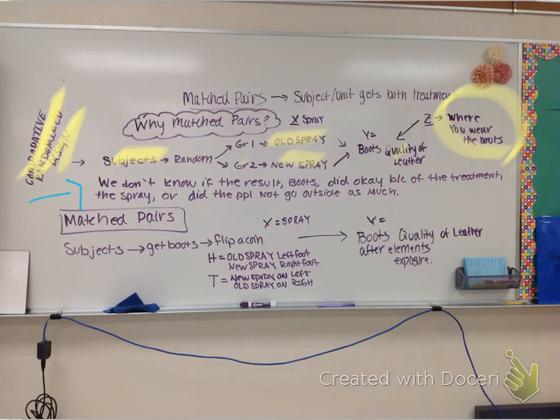So, we come up with what we call a matched pairs design where someone gets two treatments. The subjects are here. Everyone gets boots. You come to me and you say, okay, I have my boots. I flip a coin. If you have heads, you wear the old spray on your left foot, the new spray on your right foot. If you flip tails, the new spray on your left foot, the old spray on your right. Then, after six weeks or whatever, we go and we look at the boots and we look at the quality of leather after exposure to the elements, rain, snow, so on. And if we get significant results saying one is better than the other, we know that it is because of the X variable. We know it's because of the treatments there and not because of any lurking variables.